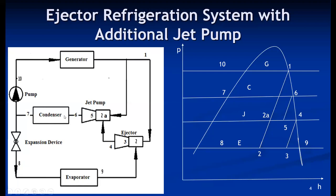From five to six, compression in the jet pump raises the pressure to the condensing pressure. Then six to seven is condensation in the condenser. At point seven, it divides into two streams: one goes through the pump to the generator — seven to ten is pumping — and the second stream expands through the expansion valve, seven to eight, then evaporates in the evaporator, eight to nine. Point nine and point two mix at point three. The second stream enters the generator at ten, evaporates from ten to one, completing the cycle. This is the ejector refrigeration system with additional jet pump, also called a multi-stage ejector refrigeration system.